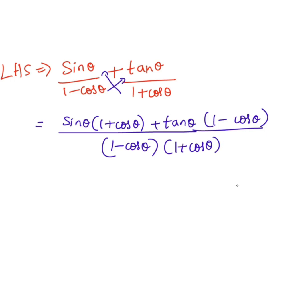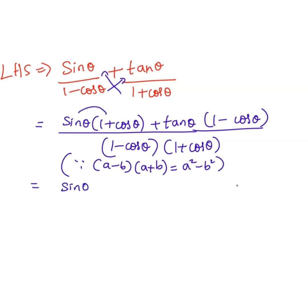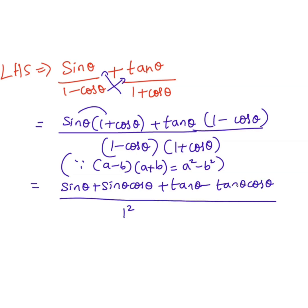We know the identity that (a minus b) into (a plus b) equals a squared minus b squared. So expanding the brackets in the numerator: sin θ plus sin θ cos θ, plus tan θ minus tan θ cos θ, divided by 1 squared minus cos squared θ.